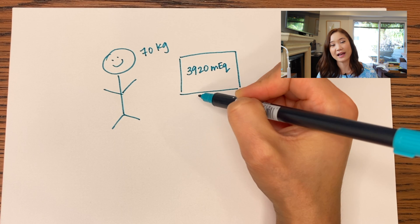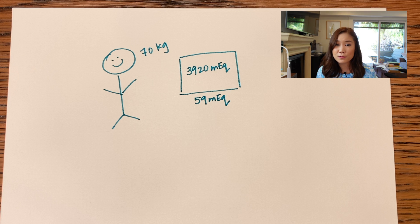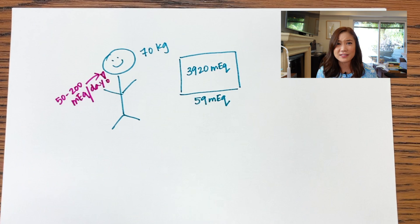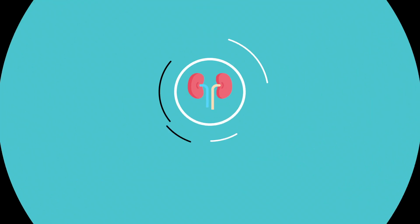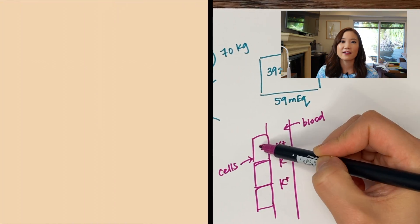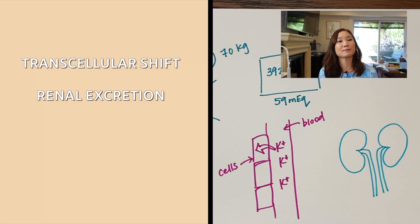A 70-kilogram person would have about 3,920 milliequivalents of potassium inside their cells, and only about 59 milliequivalents in their extracellular fluid. But in a normal diet, we take in anywhere between 50 and 200 milliequivalents of potassium a day. Obviously, if our bodies didn't do anything to get rid of that extra potassium, we'd all be walking around with severe hyperkalemia, and sudden cardiac death would be happening left and right. So our bodies have to very diligently get rid of this extra potassium that makes it into our blood through the GI tract, and it does this in two ways: it shifts potassium from the blood into the cells, and it excretes potassium through the kidneys.